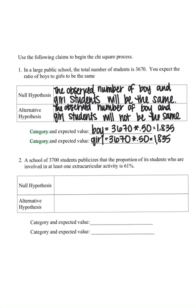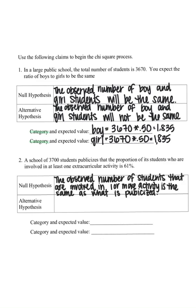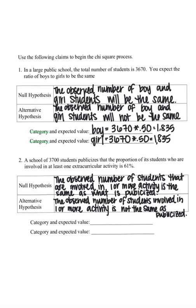Our second example is that a school of 3,700 students publicizes that the proportion of its students who are involved in at least one extracurricular activity is 61%. So our null hypothesis is going to be that they're right, and that the numbers fall within a reasonable range of that 61%. My null hypothesis would be that the observed number of students involved in at least one extracurricular activity are the same as what's posted on the website.